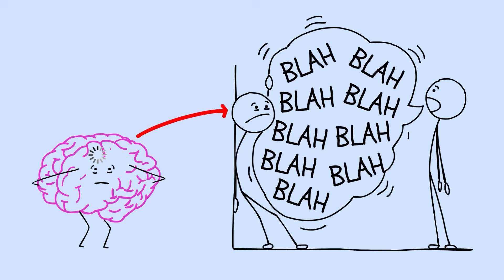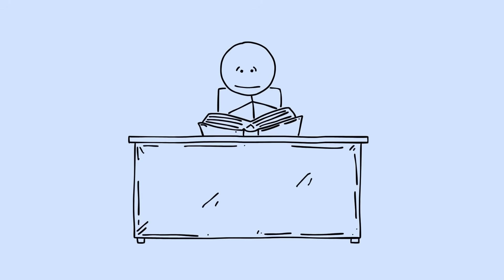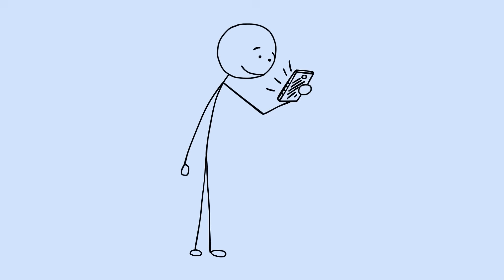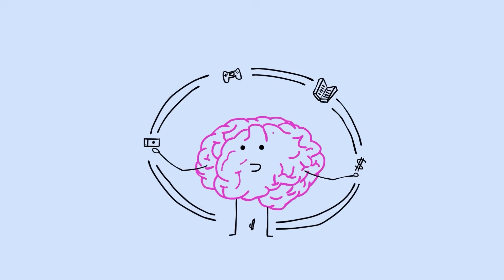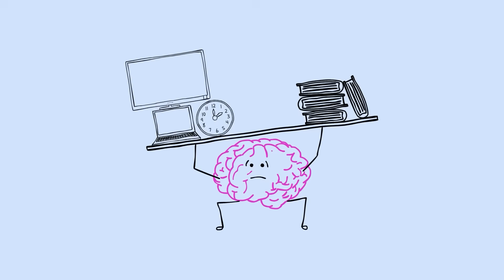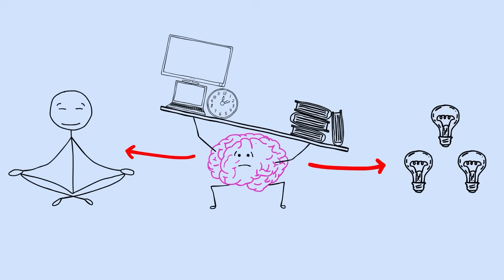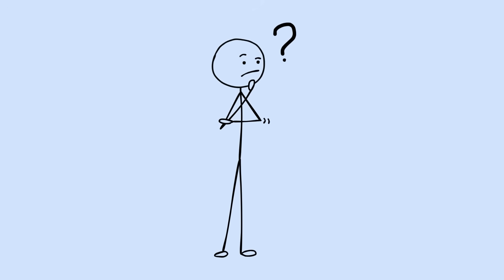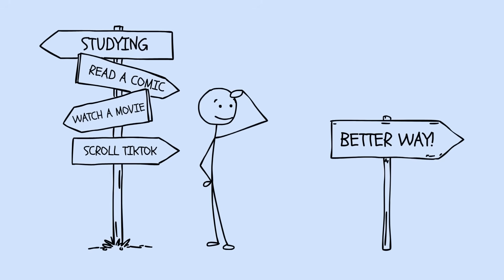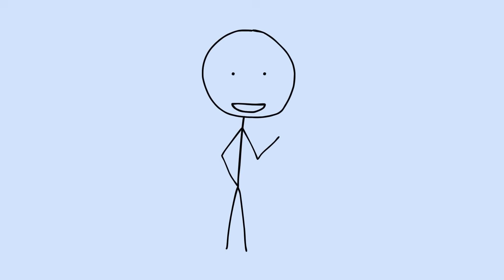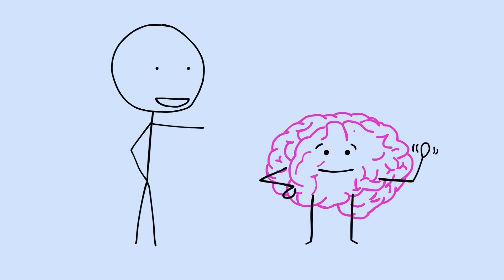You're already using half your processing power just to hear these words. This explains why multitasking while studying is like trying to text while performing surgery. Your brain literally cannot do both well. What feels like multitasking is actually rapid task switching, and each switch costs you focus and memory. That moment when you realize you've been working against your brain's natural design instead of with it. There's a better way, and it starts with understanding that your brain isn't broken. Your methods are.